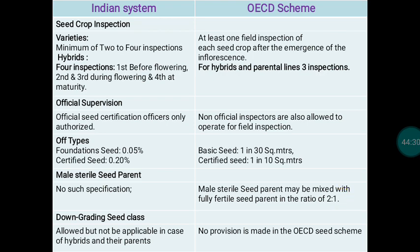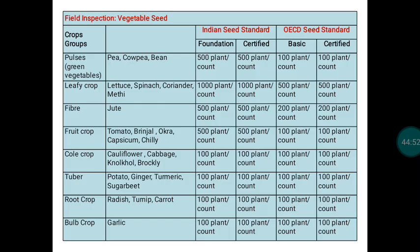Regarding downgrading of seed classes: in IMSCS, downgrading is allowed but not applicable for hybrid and parental material — it is permitted for varietal seed production. In the OECD scheme, no provision is made for downgrading, neither for varietal seeds nor for hybrids.